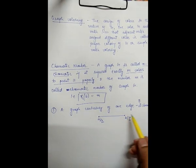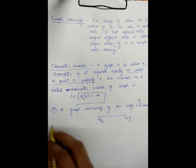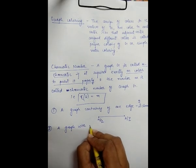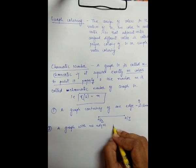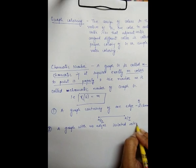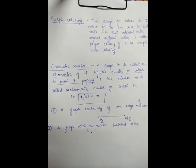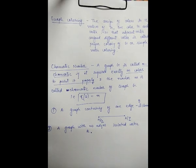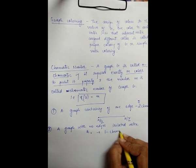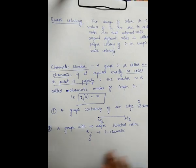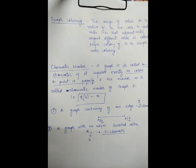A graph with no edge — meaning an isolated vertex, for example vertex A with no edges — requires only a single color to paint it properly. So a graph with no edge is one-chromatic.